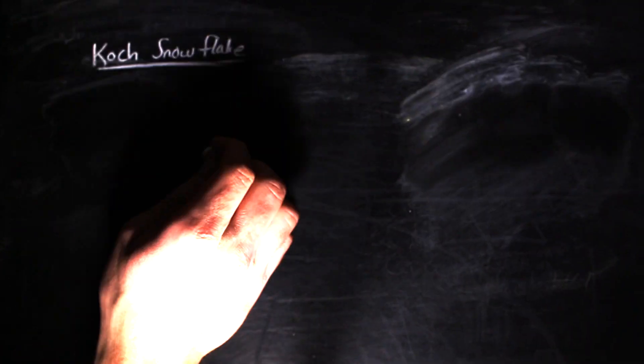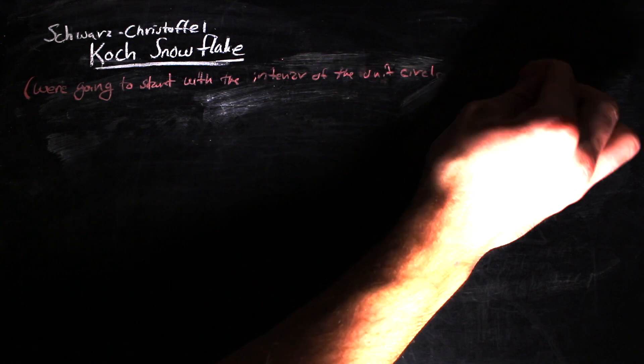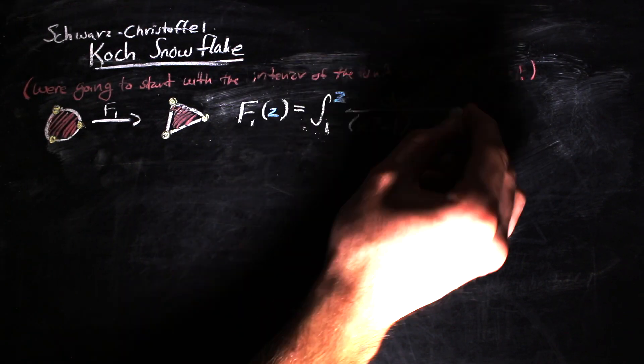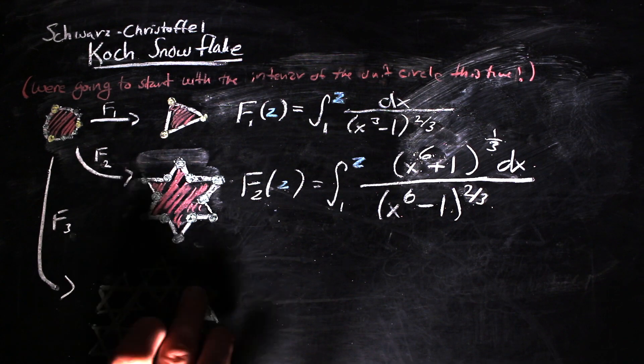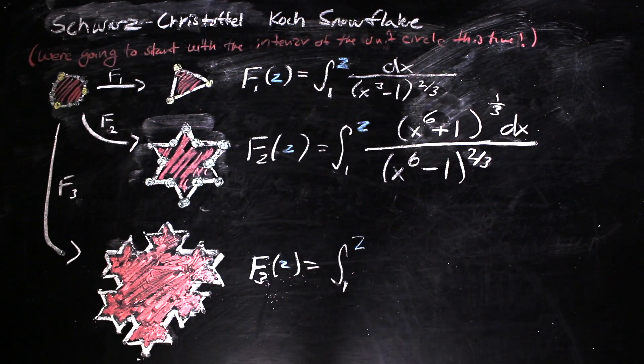Instead of mapping from the upper half plane, we will form these maps by using the interior of the unit circle as our domain. Again, the mathematics gets incredibly hairy, but here are the equations for the first three iterations of the Koch snowflake construction.